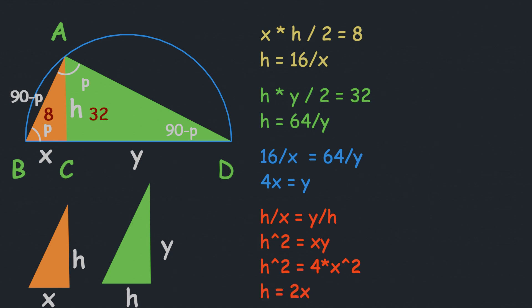Recall the first equation: h = 16/x. Comparing the values of h, we get 16/x = 2x. Multiplying both sides by x and dividing by 2 gives 8 = x².